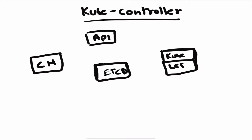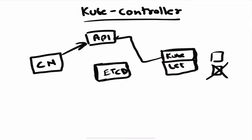Let's take the replication controller as an example. The replication controller ensures that you always have a particular number of pods running. It does that by continuously monitoring the API server for any changes. So suppose we have a pod running and it goes down.